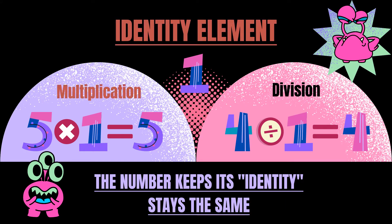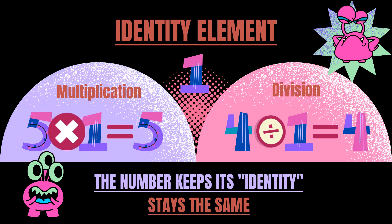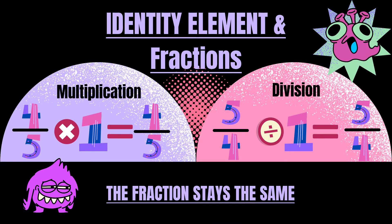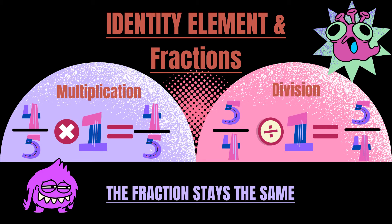The identity element for multiplication and division is one. This is because a number stays the same, or keeps its exact value, when I multiply or divide any number with one. It works the same with fractions — when I multiply or divide any fraction with one, the fraction's value stays exactly the same.